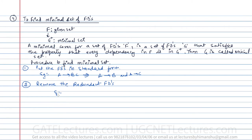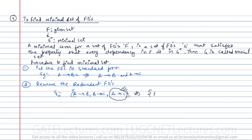Step two: remove the redundant functional dependencies. For example, if you have A→B, B→C, and A→C, then A→C is redundant because by transitivity we already know A determines B and B determines C, so A can determine C. There is no point in keeping it.